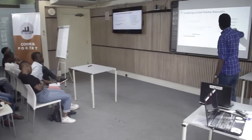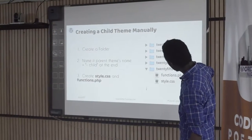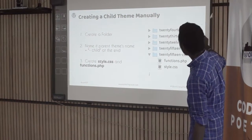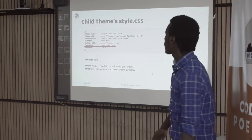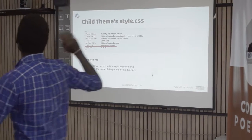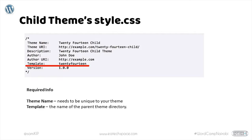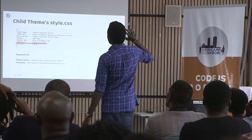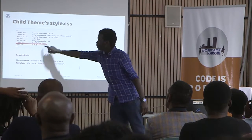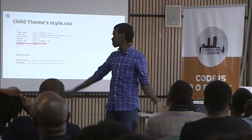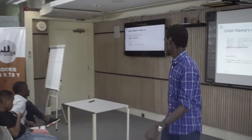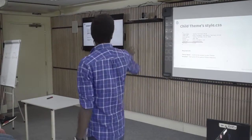The child theme folder should be in the same location as the parent theme folder. The style.css file needs some details to make it a child theme. The first is the theme name, and the second is the template field — this tells WordPress that this is a child theme of a certain parent theme. So if this is a child theme of 2014, you include the template name '2014', which you can find in the parent theme's style.css or functions.php.